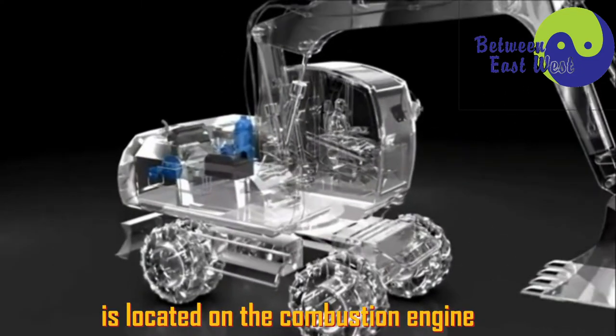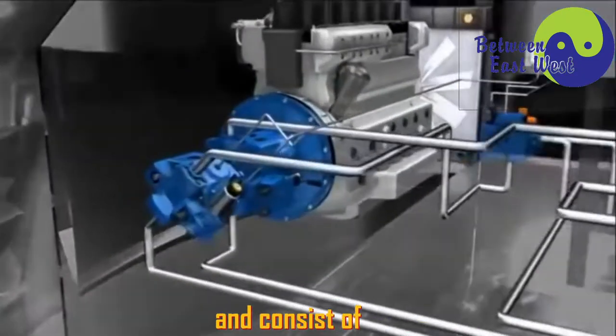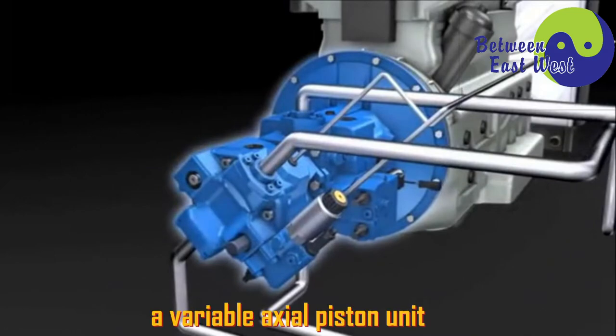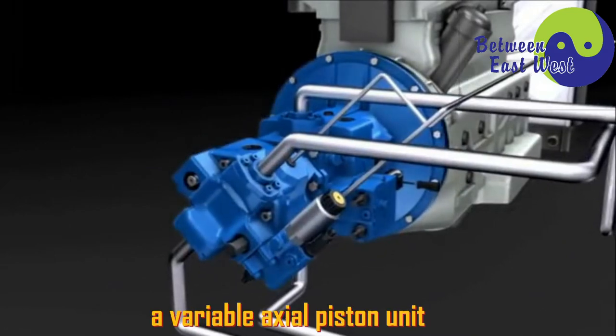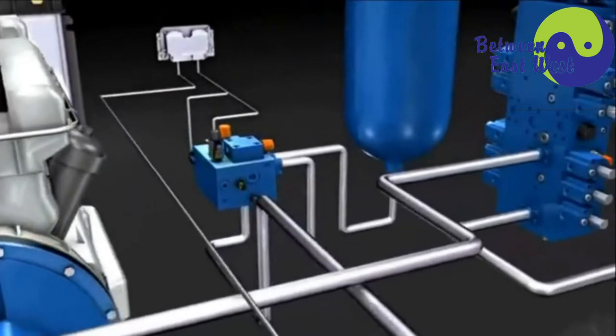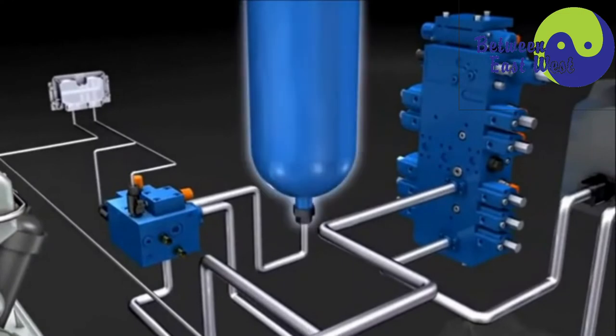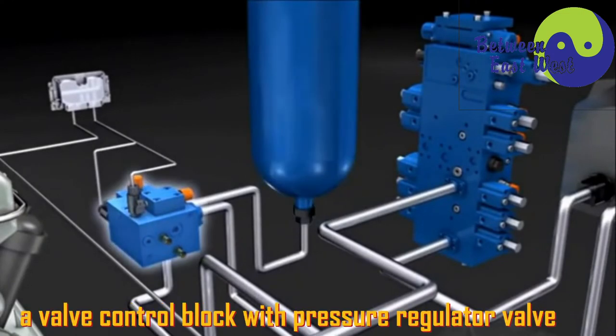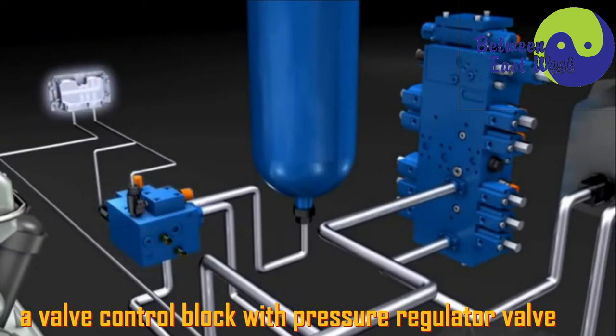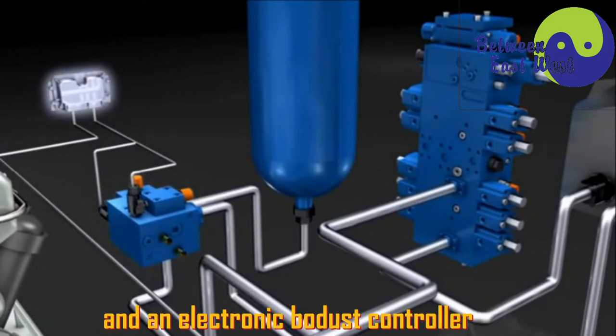The function module itself is located on the combustion engine and consists of a variable axial piston unit, a hydraulic pressure accumulator, a valve control block with pressure regulator valve, and an electronic BODAS controller.